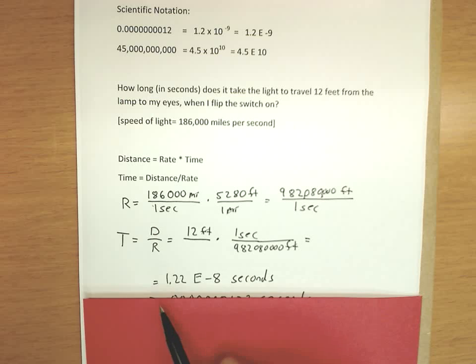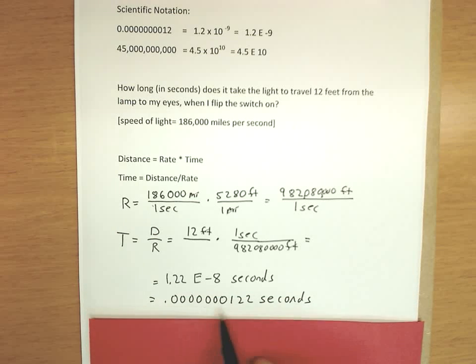And on the calculator, this will come up as 1.22e to the negative 8 seconds. Or written out as a decimal, then e to the negative 8 would move the decimal 8 spots to the left. So around the 1 is 1, and 7 zeros to get to the proper position.